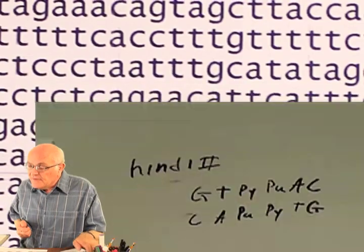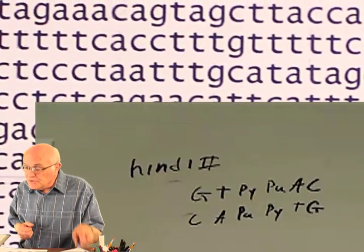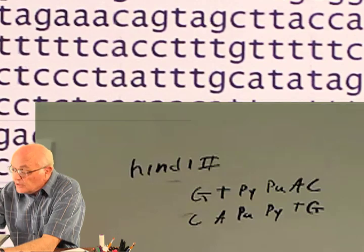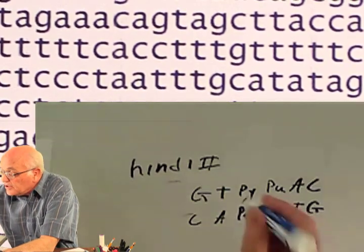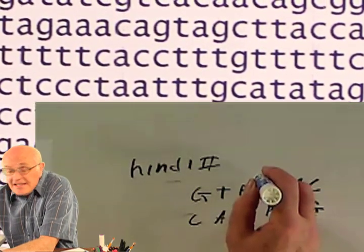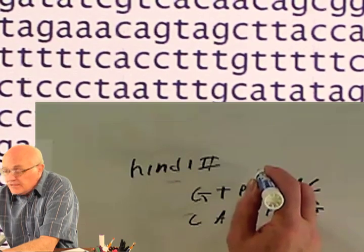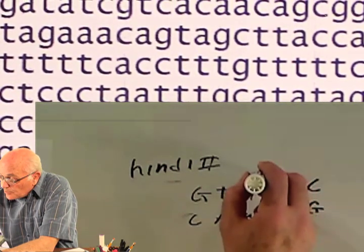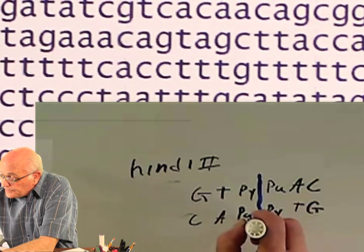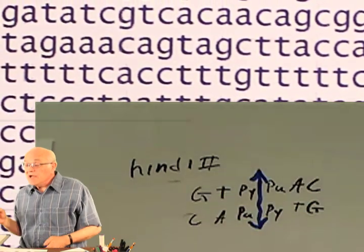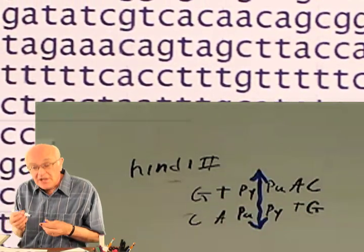Let's go straight to an example. We have HindII. HindII is produced by bacteria, and if an invading DNA enters the bacteria, this enzyme will break the DNA right at this spot right here.